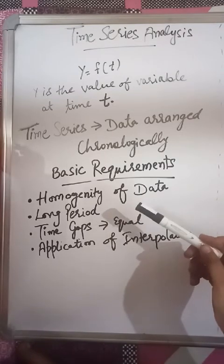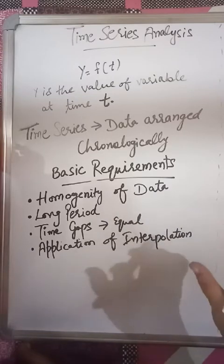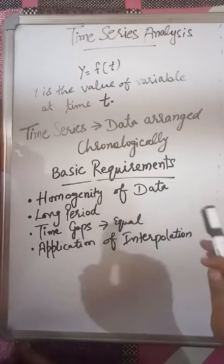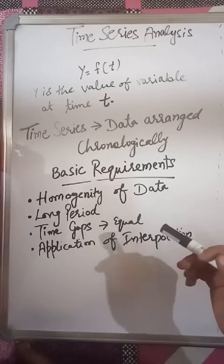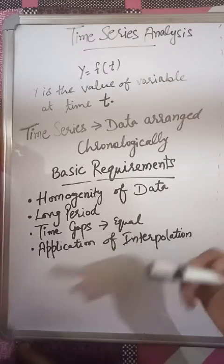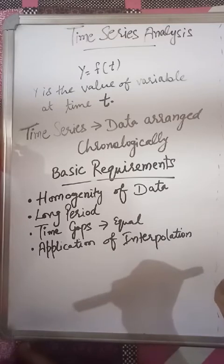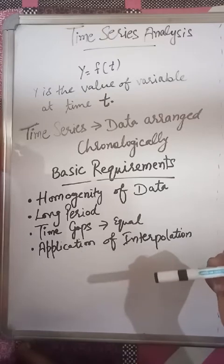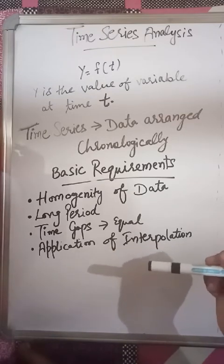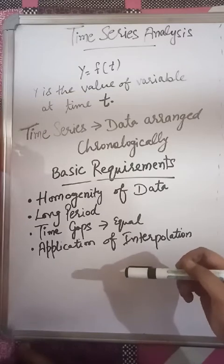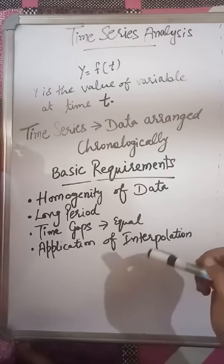Time series should be for a long period, that means data should not be taken for very short, frequent time periods - not daily or hourly data. Time periods should be long: yearly data, seasonal data, quarterly data, six monthly data. Time gaps should be equal. If I'm discussing ten years of production data, all ten years should be chronologically arranged. If we're taking quarterly data, all data should be quarterly. Time gaps should be equal.